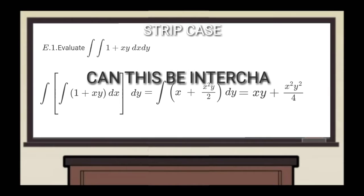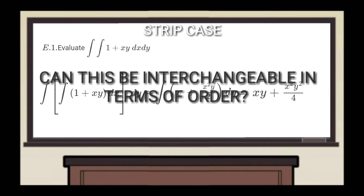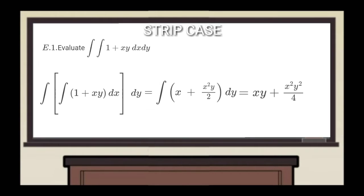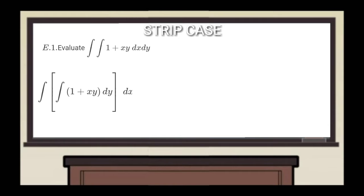Then plug it into the outer integral. To finish it, we need to compute the remaining integral with respect to y, so it will be xy plus x²y² over 4. The question is: can this be interchangeable — can it be integrated first with respect to y? Yes, it can. Again, start out with parenthesis. Treat x as a constant and focus only on the y variable. Integrate in terms of y, so it will be y plus xy² over 2. Then plug it into the outer and compute the remaining integral with respect to x, so it will be xy plus x²y² over 4. It is still the same, so you can interchange its order.